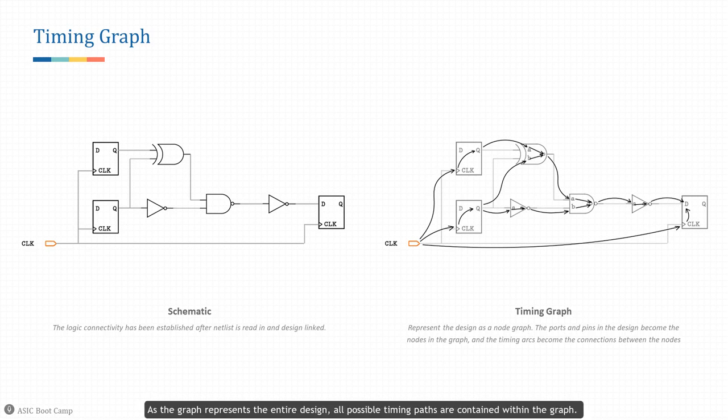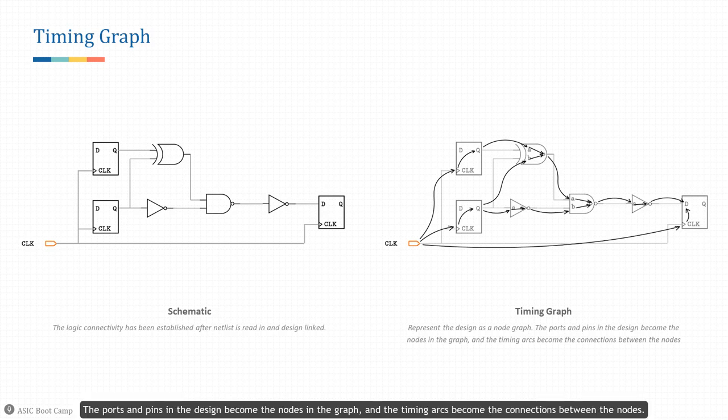As the graph represents the entire design, all possible timing paths are contained within the graph. The graph gets its name from its representation of the design as a node graph. The ports and pins in the design become the nodes in the graph, and the timing arcs become the connections between the nodes.